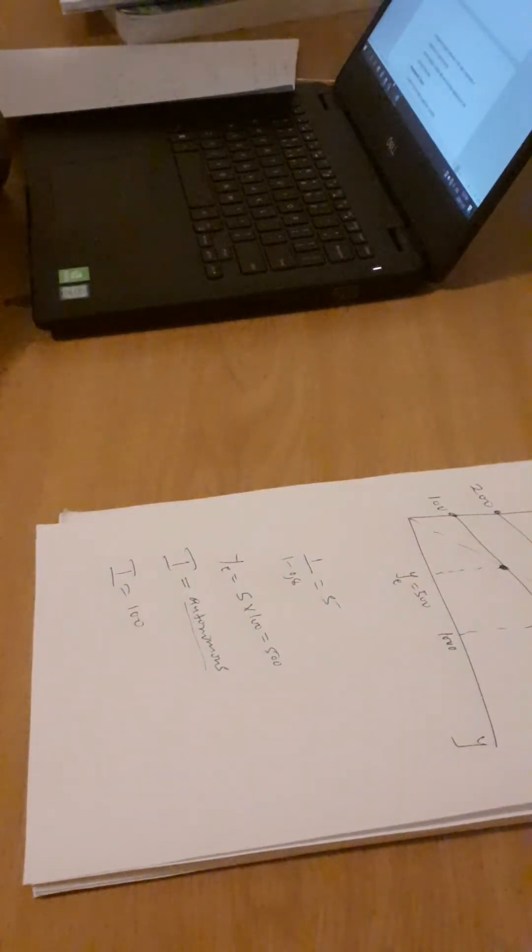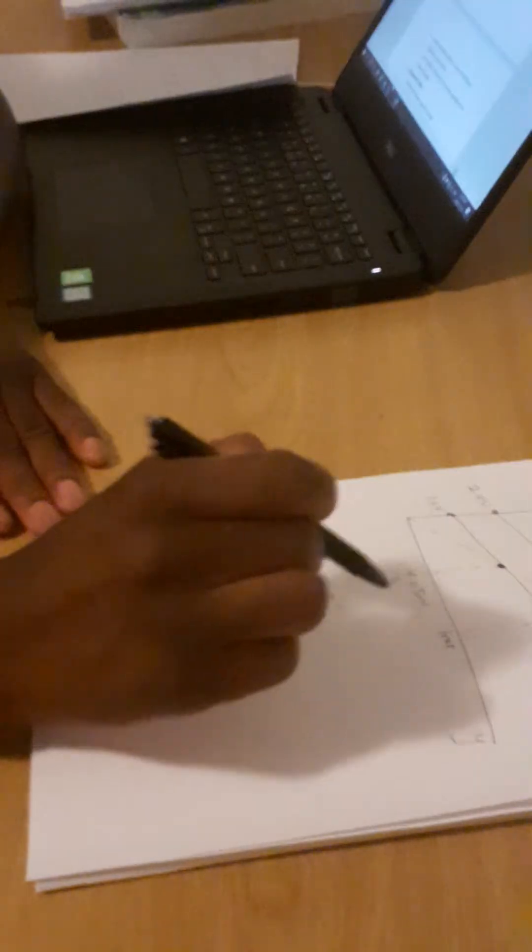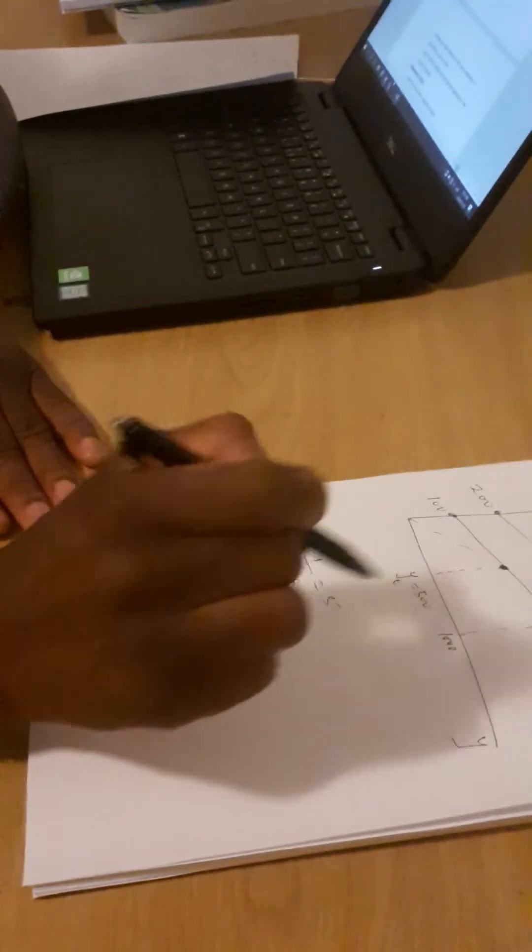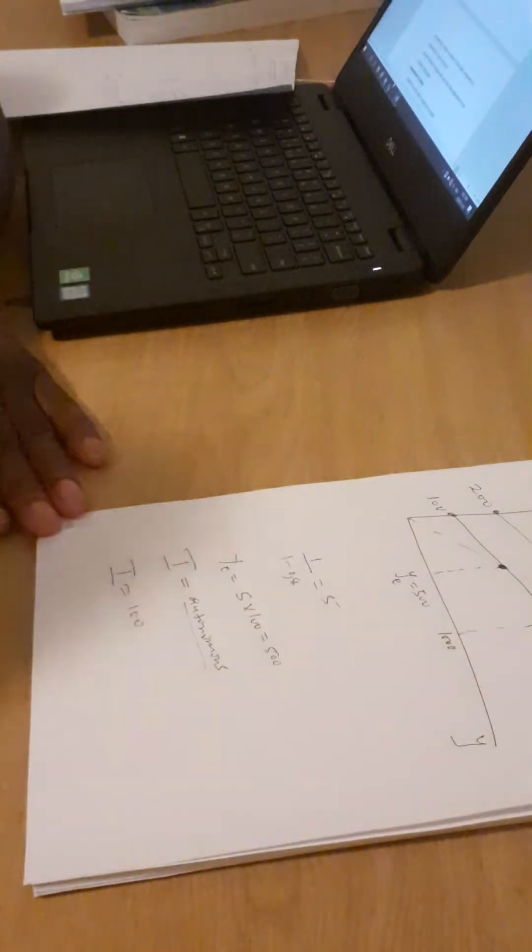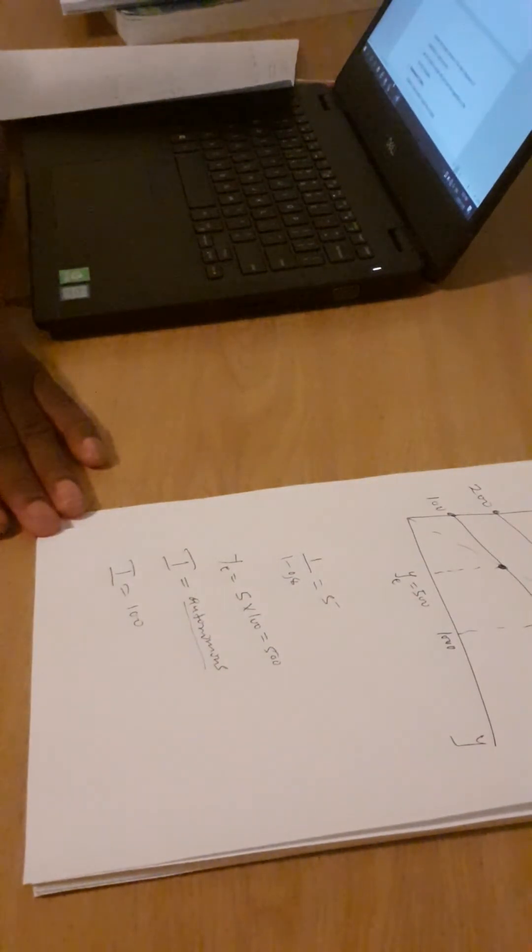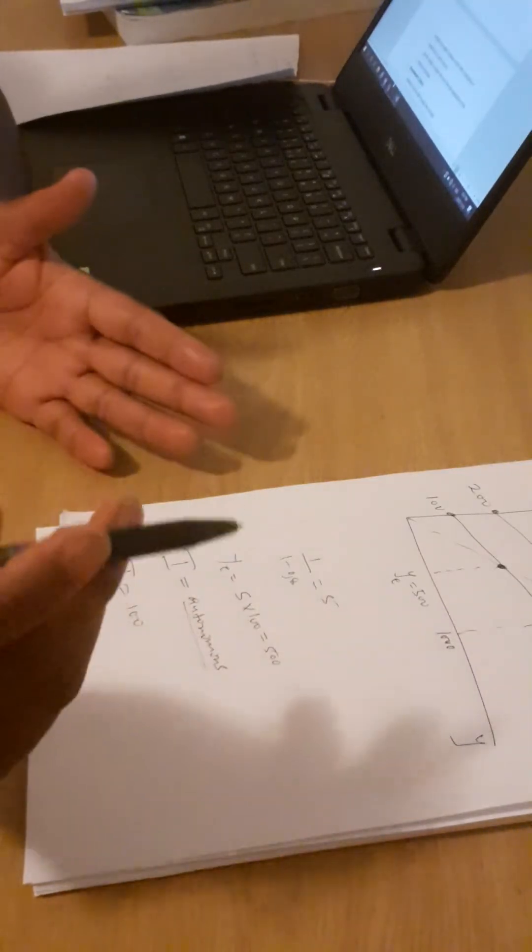But now, guys, you will notice that when I add investment here, the slope of this line, which is MPC, did not change. So therefore we are saying that the slope of the one-sector model and two-sector model is the same.